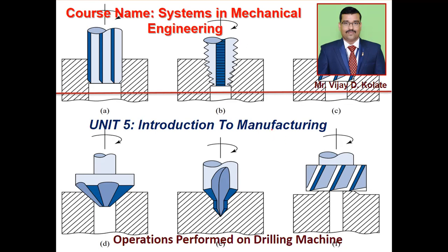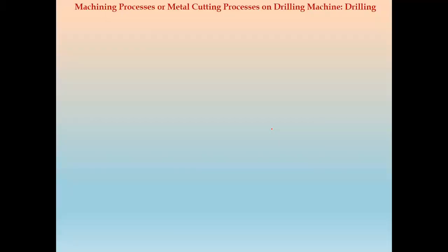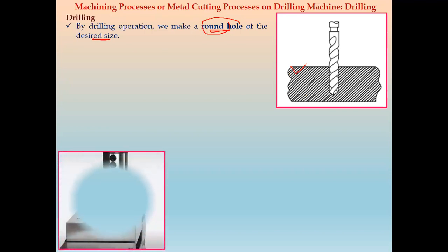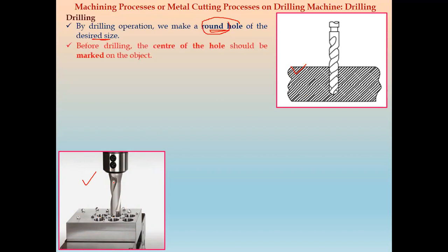The first operation that can be performed on a drilling machine is the drilling operation. By drilling, we can make a round, circular, or cylindrical hole of the desired size on a workpiece, job, product, or component. Before drilling, the center of the hole should be marked on the object, and after that the drilling process will be started.